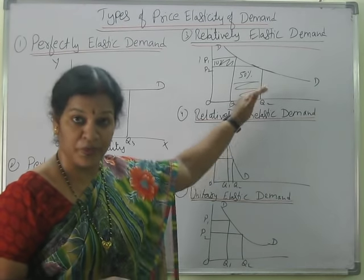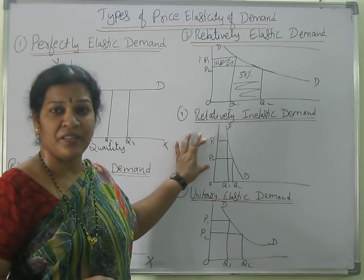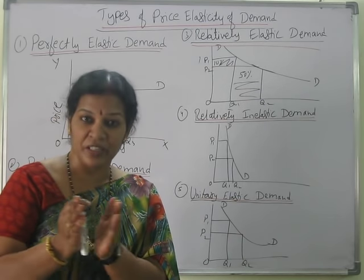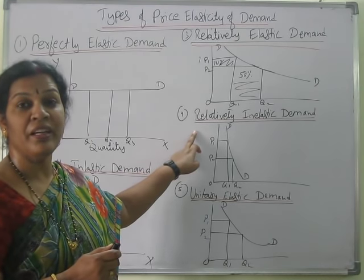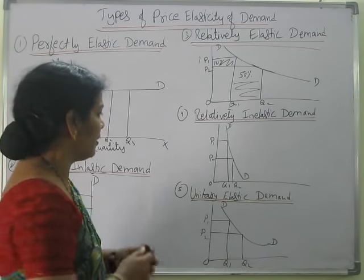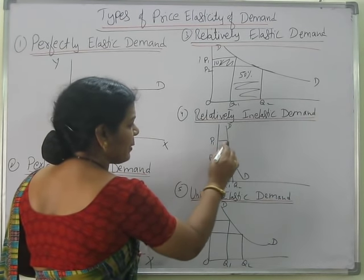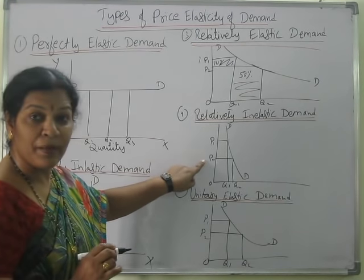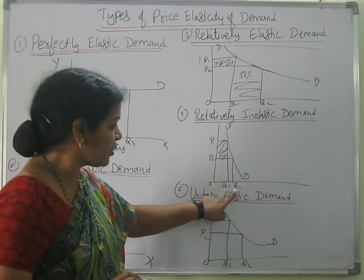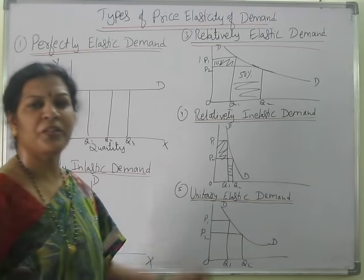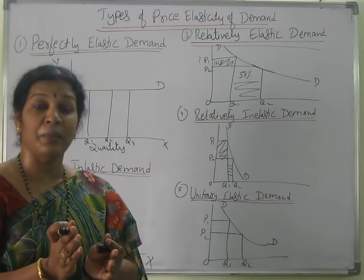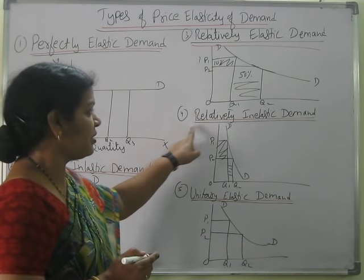The fourth type is relatively inelastic demand — opposite to relatively elastic. Here, a lot of change in the price results in only very little change in demand. In the diagram, when price decreases from P1 to P2, quantity only increases slightly from Q1 to Q2. The change in quantity is very small even though the price decreased a lot. People are not much interested. In such cases, we say it is relatively inelastic demand.